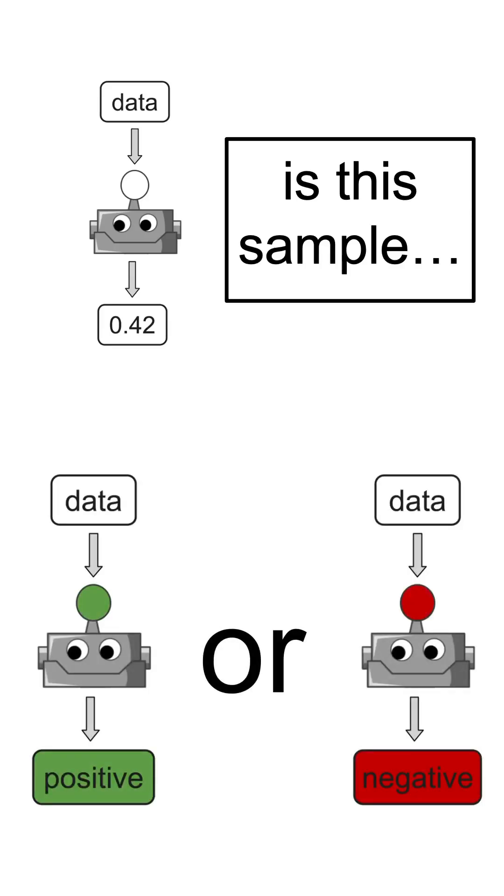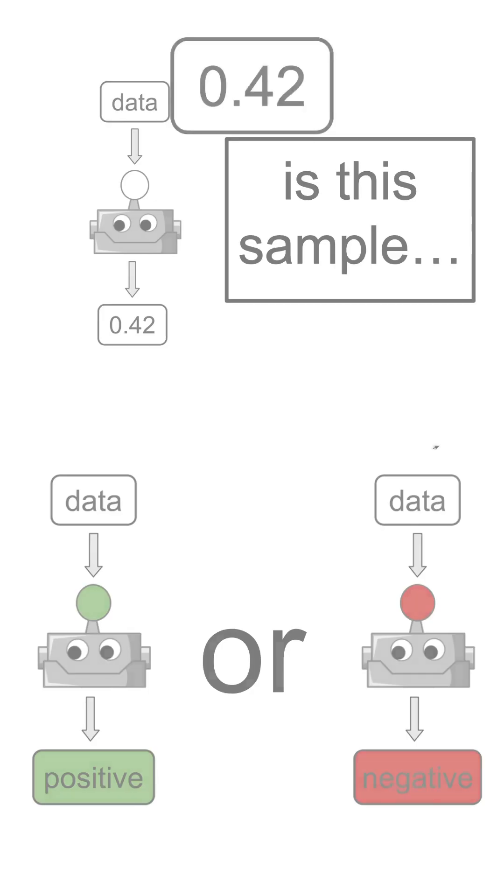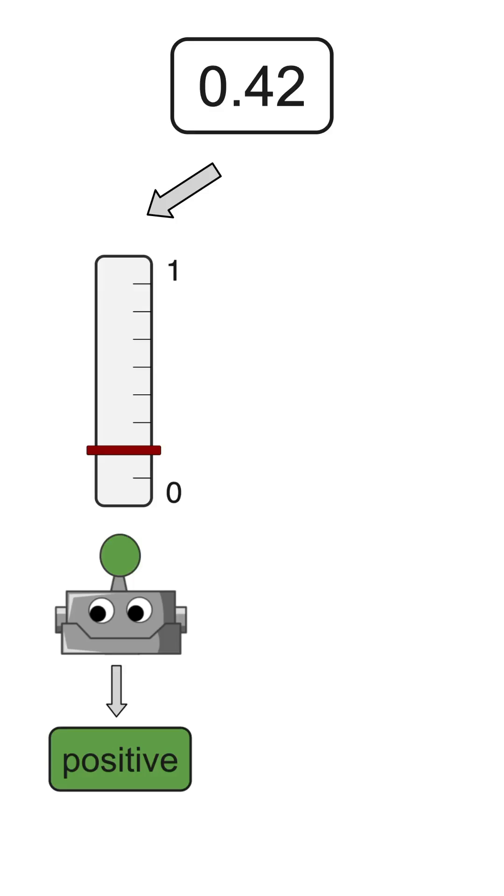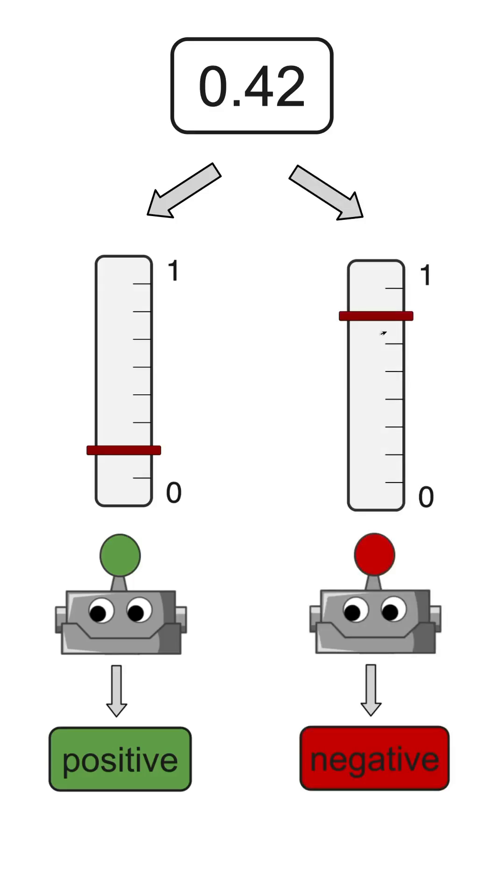To do that, we need to set a certain threshold for our model, such that if the probability for a given sample is higher than this threshold, then we have a positive sample, and if it's lower than this threshold, we have a negative sample.